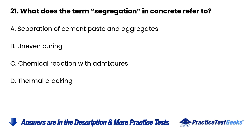Question 21. What does the term segregation in concrete refer to? A. Separation of cement paste and aggregates. B. Uneven curing. C. Chemical reaction with admixtures.